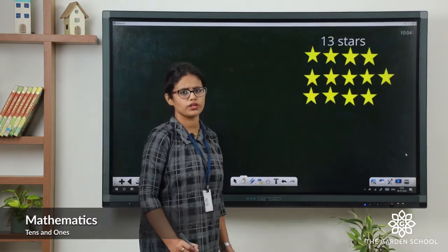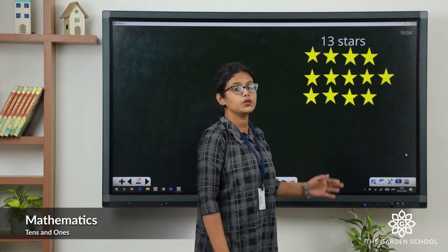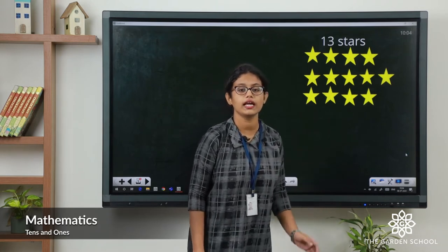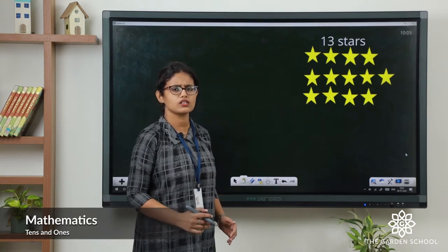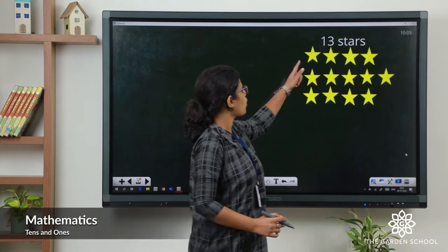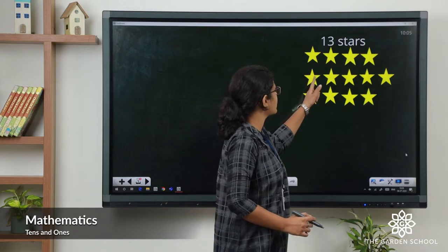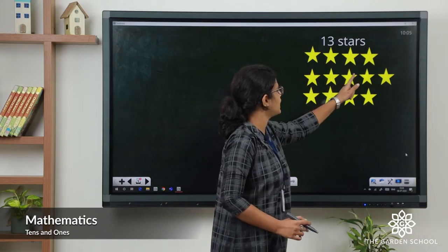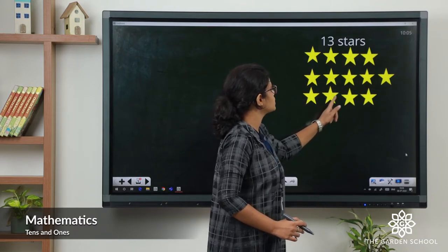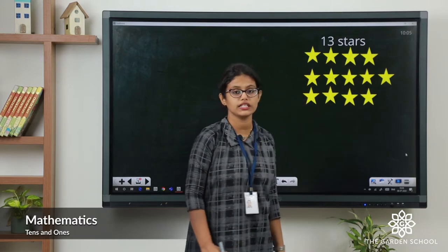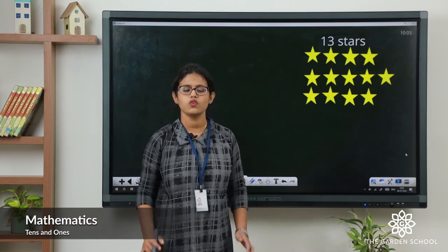Moving on to one more example. Here you can see stars. How many stars are there? 1, 2, 3, 4, 5, 6, 7, 8, 9, 10, 11, 12, 13. How many stars? 13 stars.